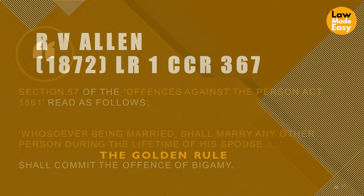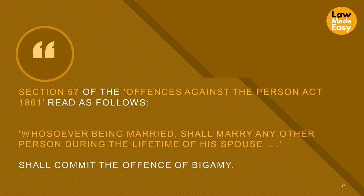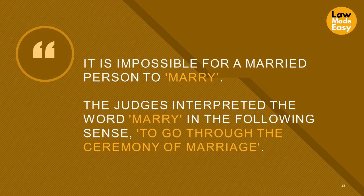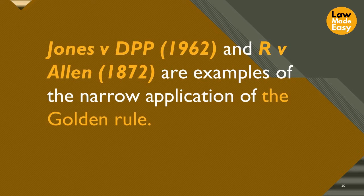In R v Allen 1872, the relevant provision is section 57 of the Offences Against the Person Act 1861: 'Whosoever being married shall marry any other person during the lifetime of his spouse shall commit the offence of bigamy.' If we take the literal meaning, it is impossible for a married person to marry — so he or she could never commit this offence. However, the judges interpreted the word 'marry' as meaning 'to go through the ceremony of marriage.' Jones v DPP and R v Allen were examples of the narrow application of the Golden Rule — in both cases the words had more than one meaning and the sensible one was applied.